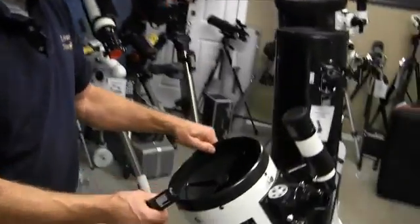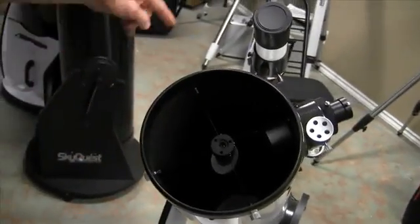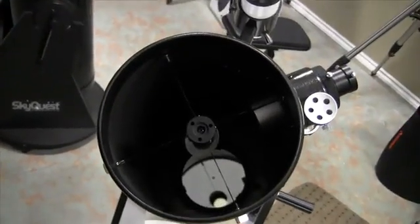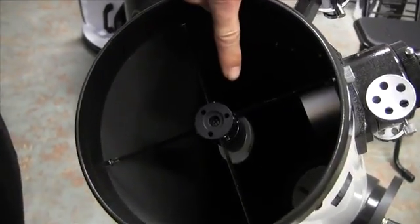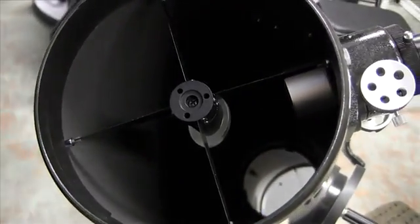In a Newtonian or Dobsonian style telescope you've got two mirrors: the primary mirror, which is down at the bottom of the tube and is the larger of the two mirrors, and a secondary mirror, which is right up here at the front of the telescope tube. It takes the light and reflects it out to the focuser and eyepiece.